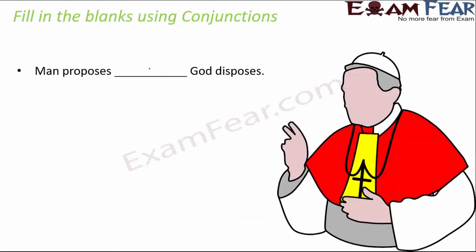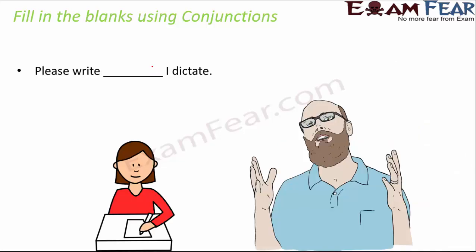'Man proposes ___ God disposes.' Man does one thing, God does another — these are contradictory, so: 'Man proposes but God disposes.' Next: 'Please write ___ I dictate.' You are giving an order to write the way I dictate, so: 'Please write as I dictate.' This is also a subordinating conjunction — we are putting a condition that you have to write the way I dictate.